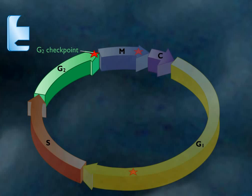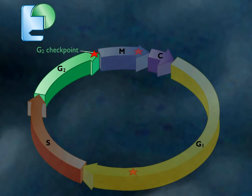During G2, the cell gradually accumulates G2 cyclin, also called mitotic cyclin. The cyclin binds to CDK to form a complex called MPF, mitosis promoting factor.